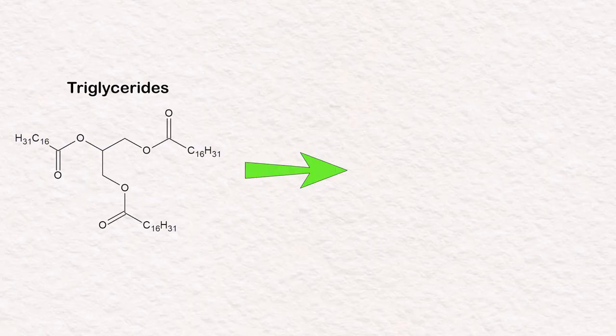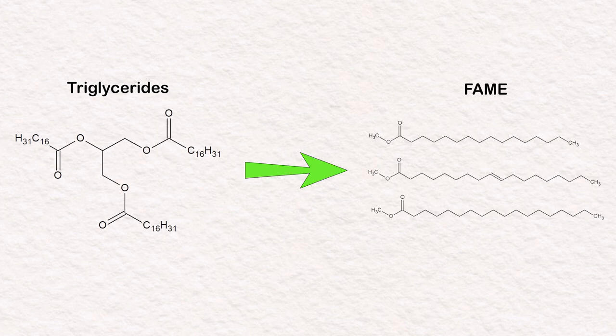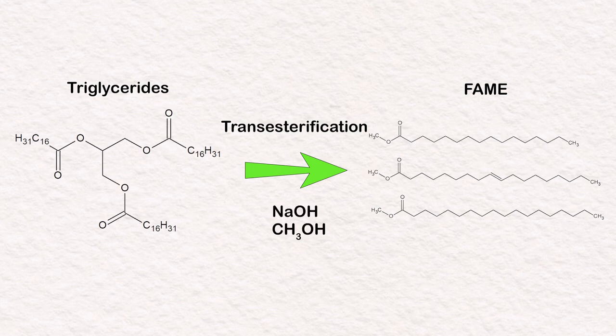So to get biodiesel, I need to convert the glycerides in my sunflower oil into fatty acid methyl esters. To do this, I can apply something called transesterification. To do a transesterification, I only need two chemicals besides my sunflower oil, which are just sodium hydroxide and methanol.